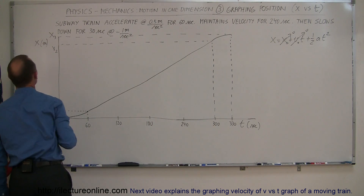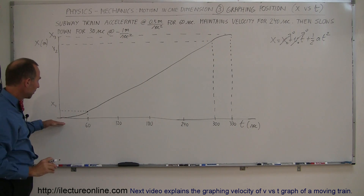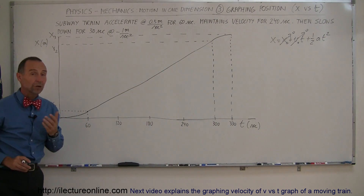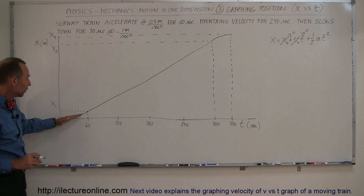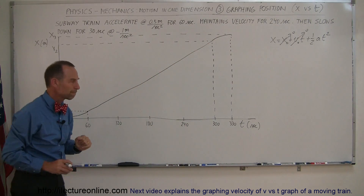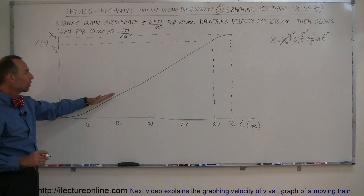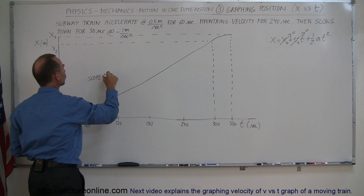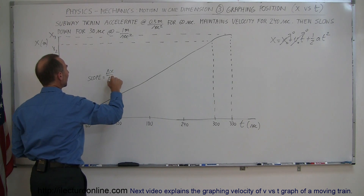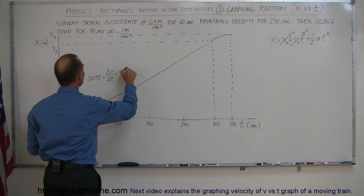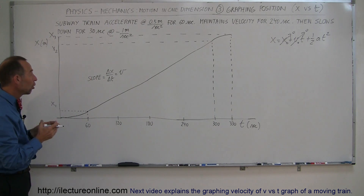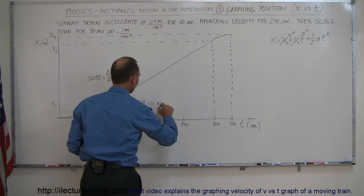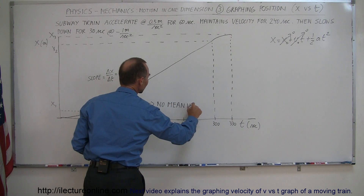That's what the graph looks like: a parabolic increase, then constant velocity, then a parabolic decrease. That is a position versus time graph for an object that starts from rest, accelerates, reaches maximum speed, maintains that speed, and then slows down. Now in a velocity graph the slope of the graph equals the change in position over time, which by definition is velocity. So in an x versus t graph the slope is equivalent to velocity. The area underneath the curve has no physical meaning and can be ignored.